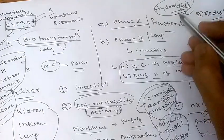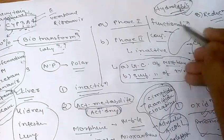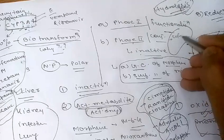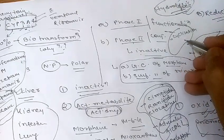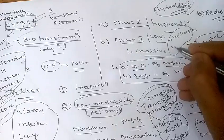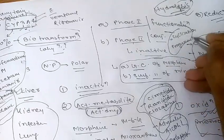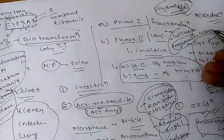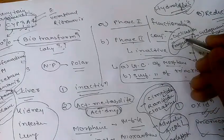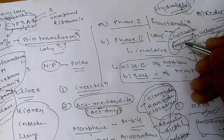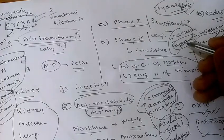Some additional phase one reactions include cyclization — the formation of a ring structure from a straight-chain compound, as seen with proguanil being converted into cycloguanil. There is also de-cyclization, which involves opening of the ring structure of a cyclic drug molecule, as seen with barbiturates and phenytoin.